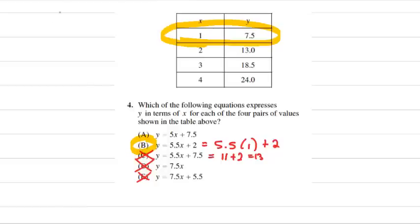Y equals 5.5X plus 2. So for 2, we should get an output of 13. 5.5 times 2 plus 2 equals 11 plus 2, which is 13. So choice B seems to be panning out.